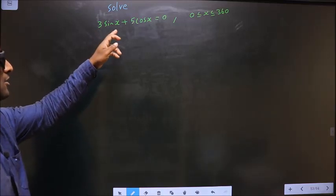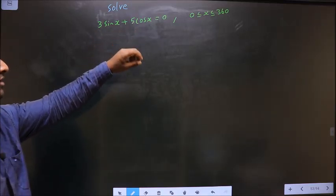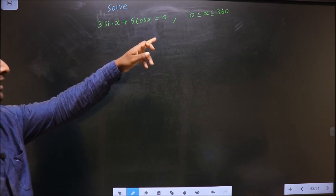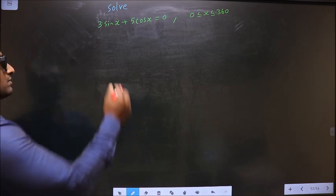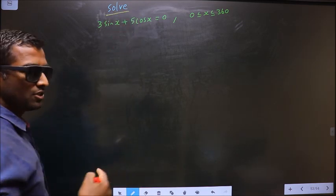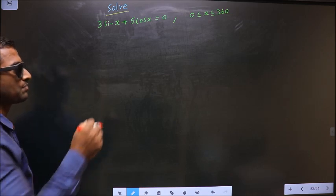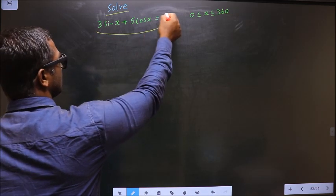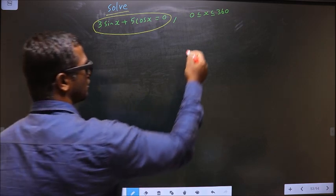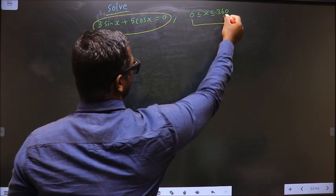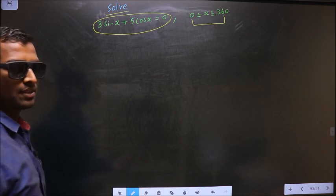Solve 3 sin x plus 5 cos x equal to 0, where x lies in the interval 0 to 360 degrees. Here they told you to solve, so you should find the values for x satisfying this equation. And also it should lie in the interval 0 to 360 degrees.